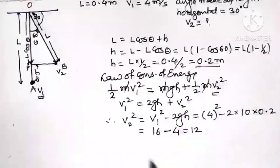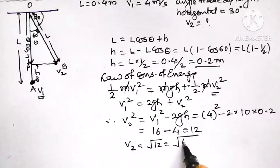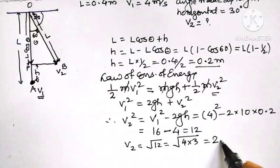This is equal to 12, or V2 is equal to under root of 12, which means under root of 4 into 3. Square root of 4 means we can take it as 2 outside the square root. So this is 2 root 3.